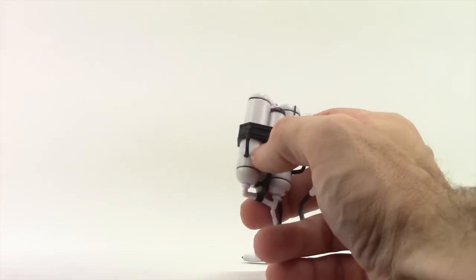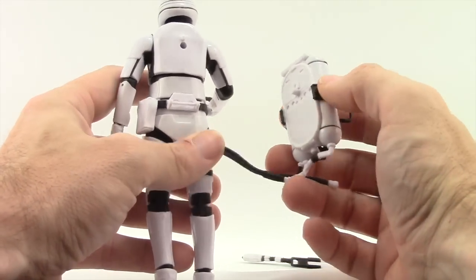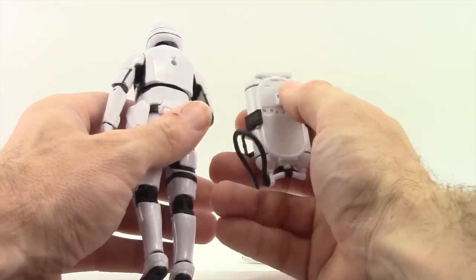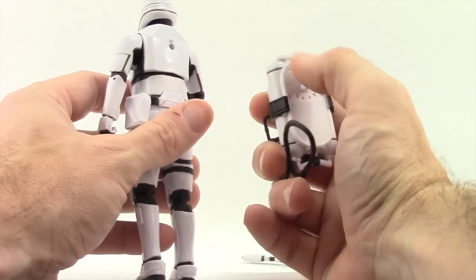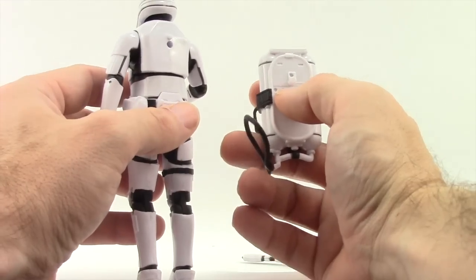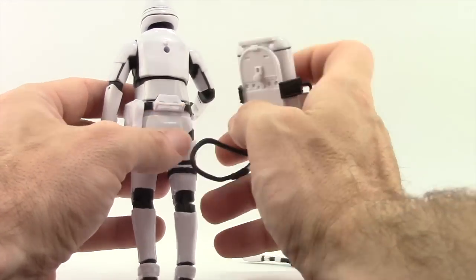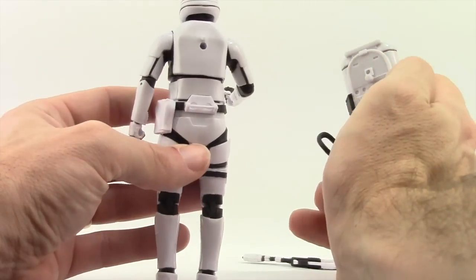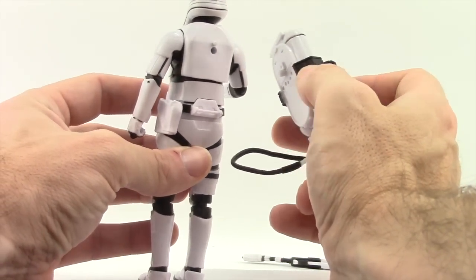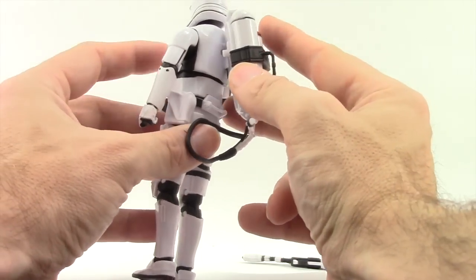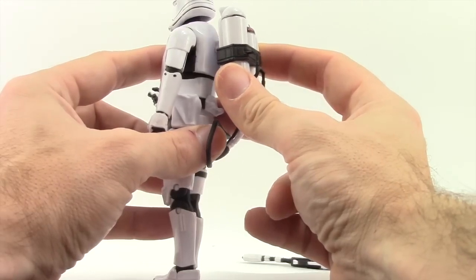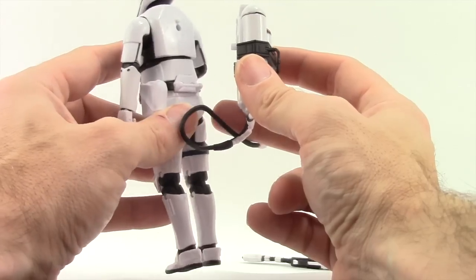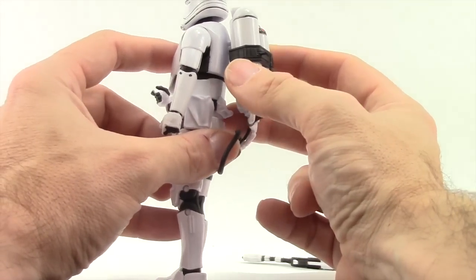The backpack attaches to the back of the figure. Instead of just a single peg and hole system, they've given a peg and hole on both the backpack and the figure to secure it extra tight. The peg on the backpack plugs into the hole on the figure, and the peg on the figure plugs into the hole on the backpack.